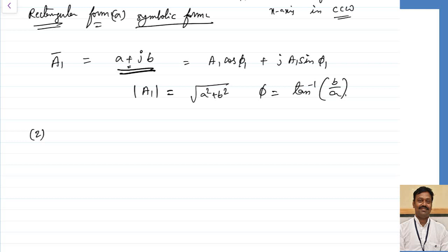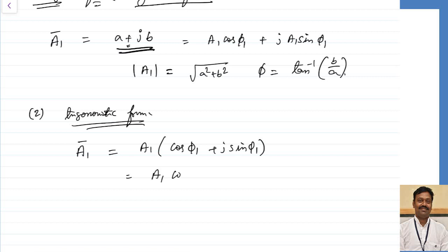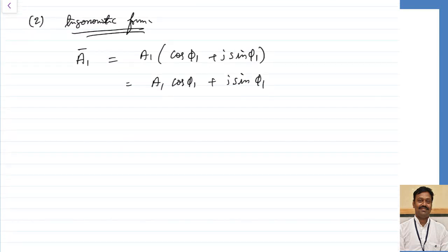The second form is the trigonometric form. In trigonometric form, a vector is represented as A1 multiplied by cos(phi1) plus j sin(phi1). Both the rectangular and trigonometric forms are correlated — they are just different ways of representation. The details will be clarified in numericals.